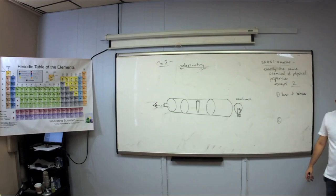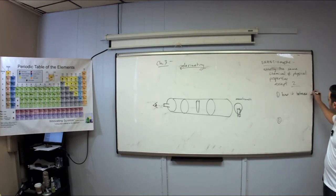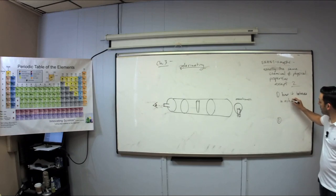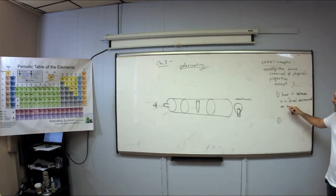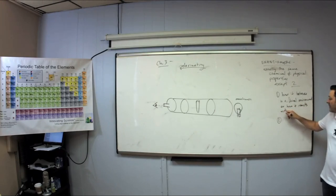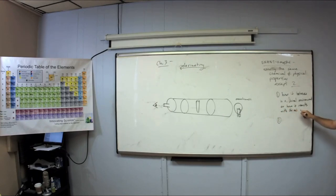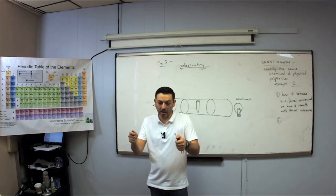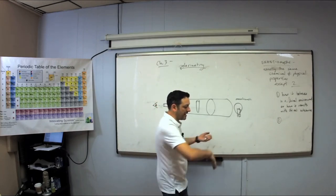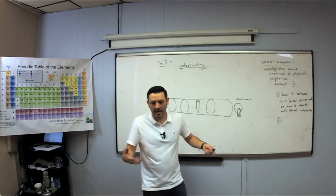Behave means how it reacts, how it interacts, how it bonds — how it behaves in a chiral environment or how it reacts with chiral substances. My right hand is the same as my left hand — I could hammer a nail with either. But when it comes to screwing in a screw, the right hand and the left hand are different because the screw is chiral and my hands are chiral.